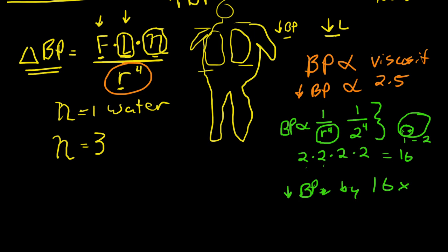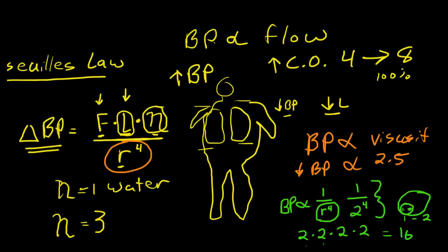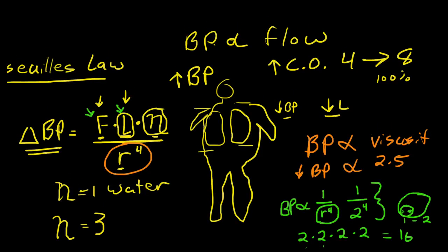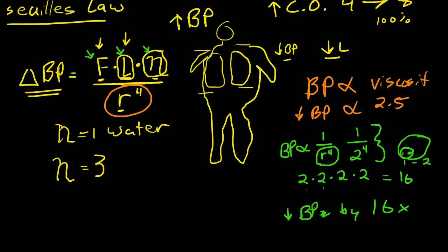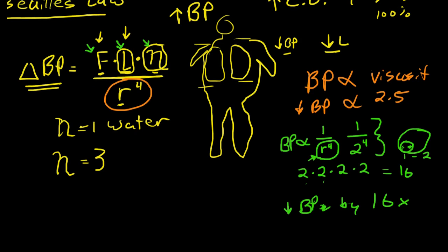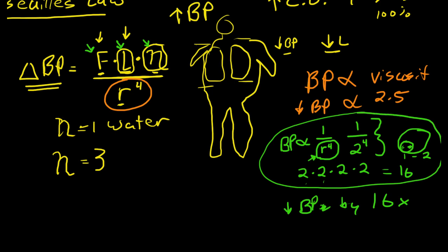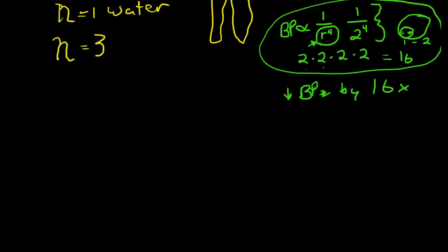All the other factors in this equation — blood flow, vessel length, and viscosity — are directly proportional on a one-to-one basis, whereas radius is inversely proportional to a power of 4. So the radius of the blood vessel is the factor that has the most consequence for changes in blood pressure. The main way that the body controls blood pressure is by changing vessel diameter, or changing the vessel radius.